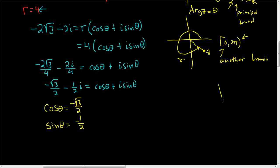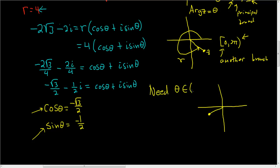Now if we draw a picture on the side, we can try to visualize where this complex number is. Keeping in mind that on the unit circle, cosine is the x-coordinate and sine is the y-coordinate, it looks like we're going to be in the quadrant where both x and y are negative — somewhere down over here. We want the angle that lives in the principal branch, so we need theta in the interval negative pi to pi. That means the angle has to be negative, and using trig it looks like the angle should be negative 5pi over 6.